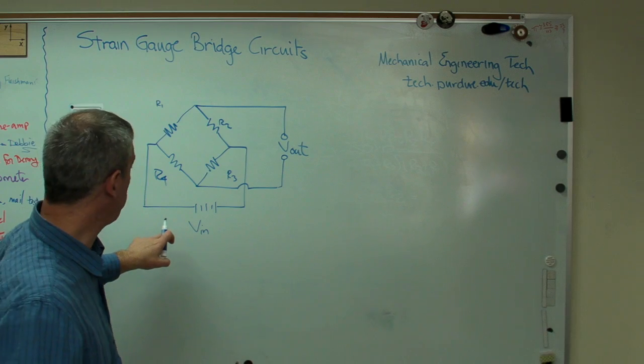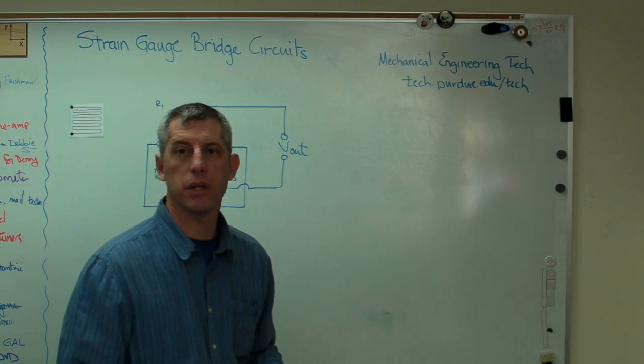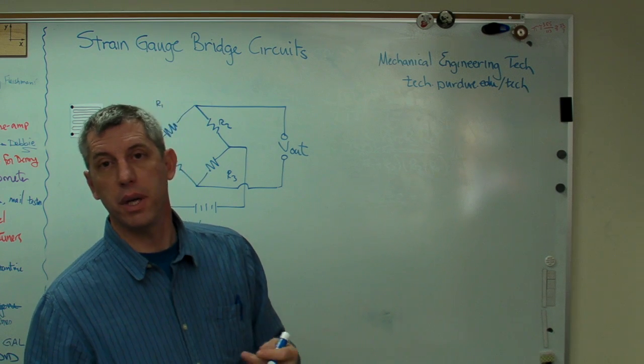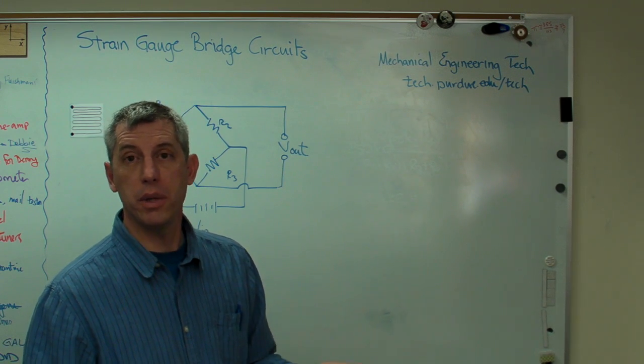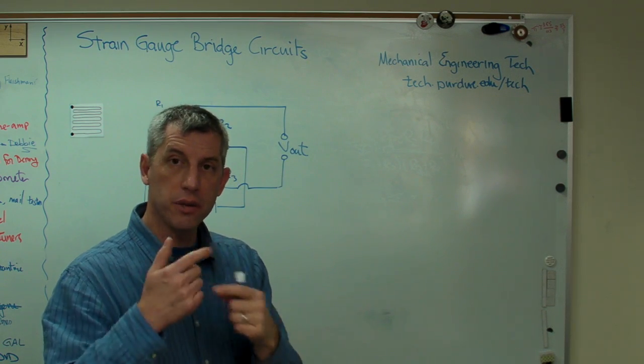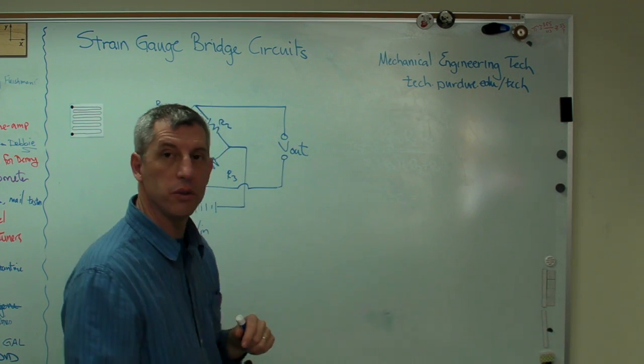Input voltage, and that can be batteries or an electronic power supply or something. V out. That could be your data acquisition system. It could be an oscilloscope. It could be just a voltmeter. But somehow, you're going to measure the change in the voltage potential across those two leads right there.